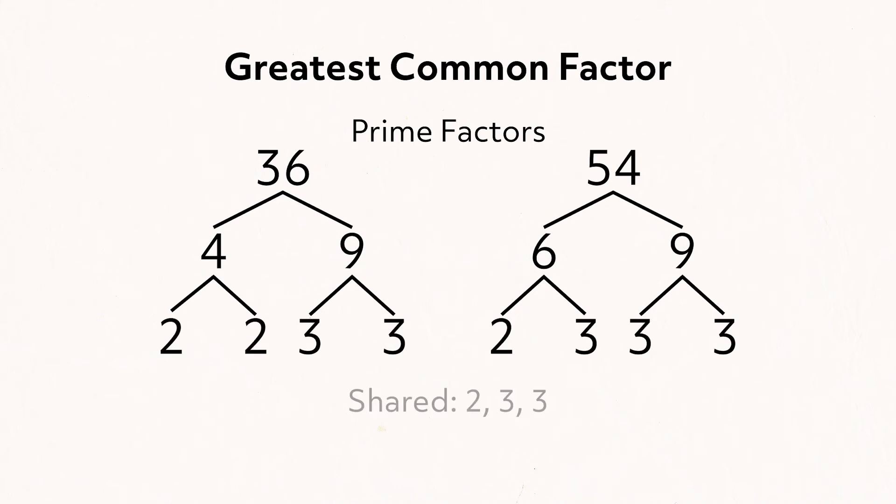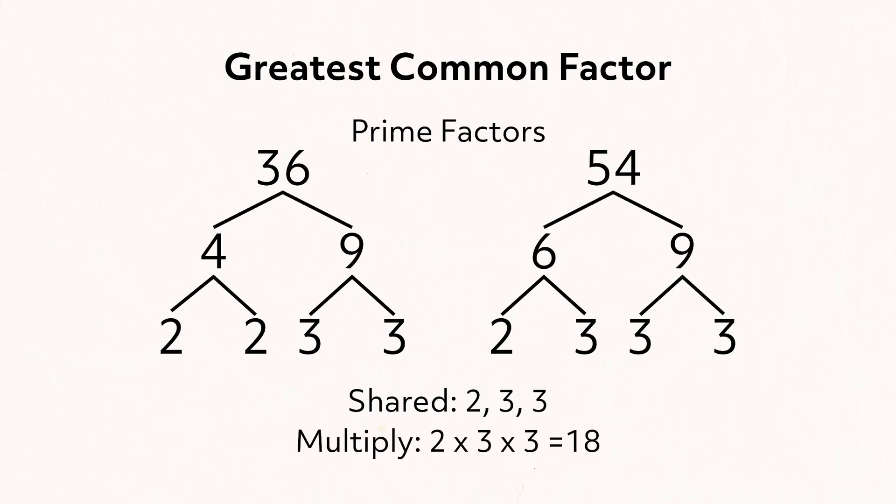Now that methods for finding least common multiples have been introduced, we'll need to change our mindset to finding the greatest common factor of two or more numbers. We will be identifying a value smaller than or equal to the numbers being considered. Ask yourself: what is the largest value that divides both of these numbers? Understanding this concept is essential for dividing and factoring polynomials. Prime factorization can also be used to determine the greatest common factor; however, rather than multiplying all the prime factors like we did for the least common multiple, we'll multiply only the prime factors that the numbers share. The resulting product is the greatest common factor.